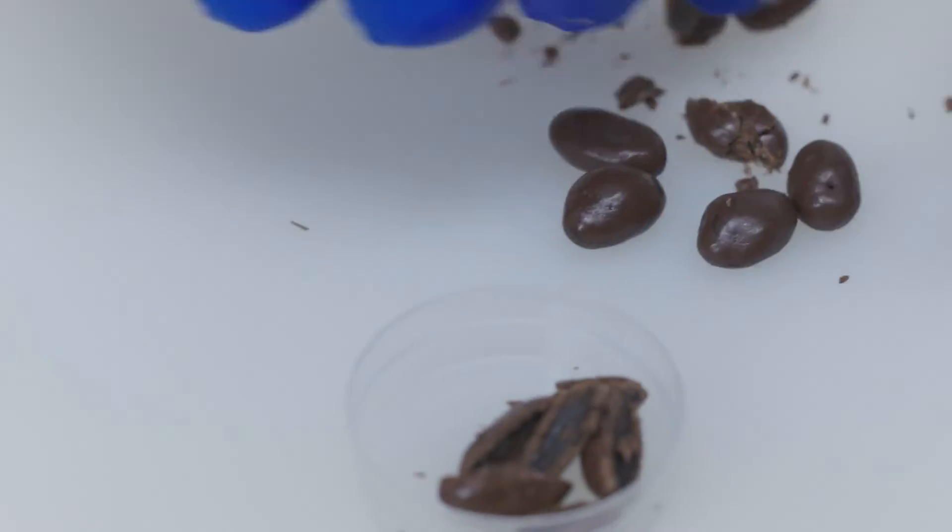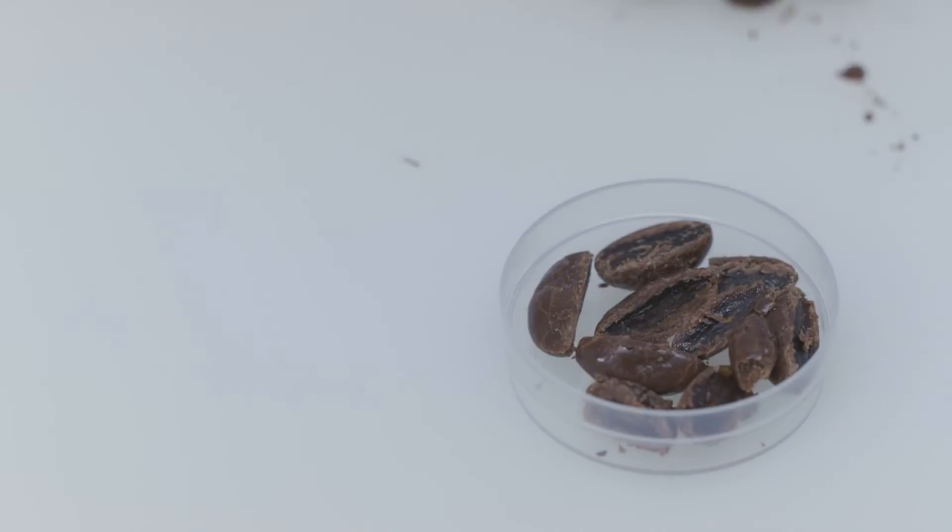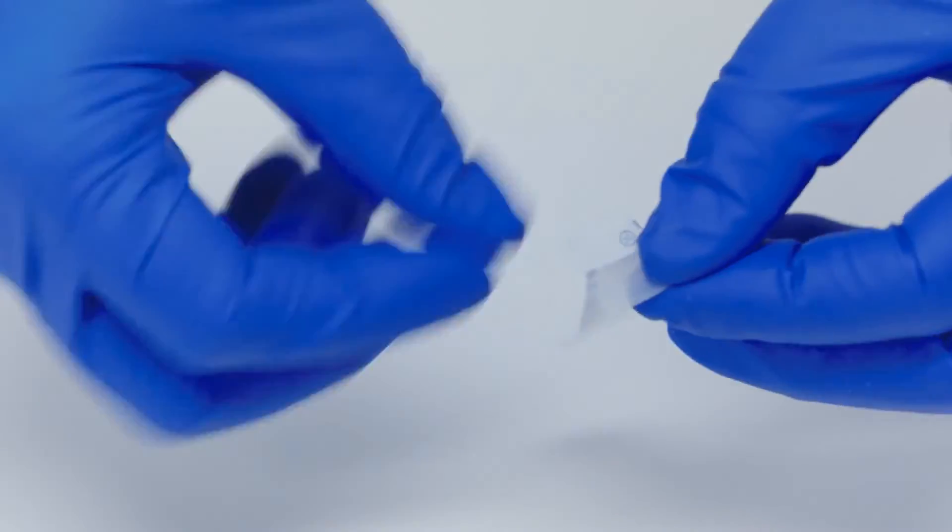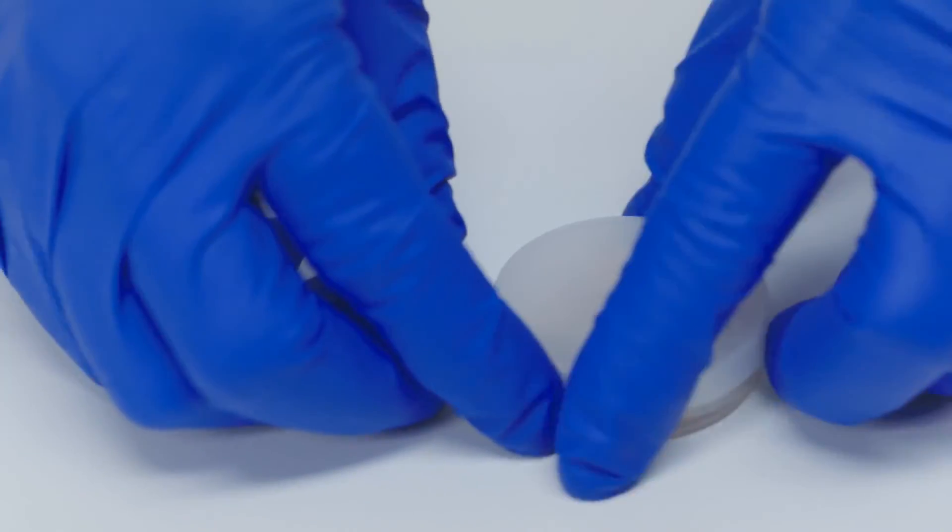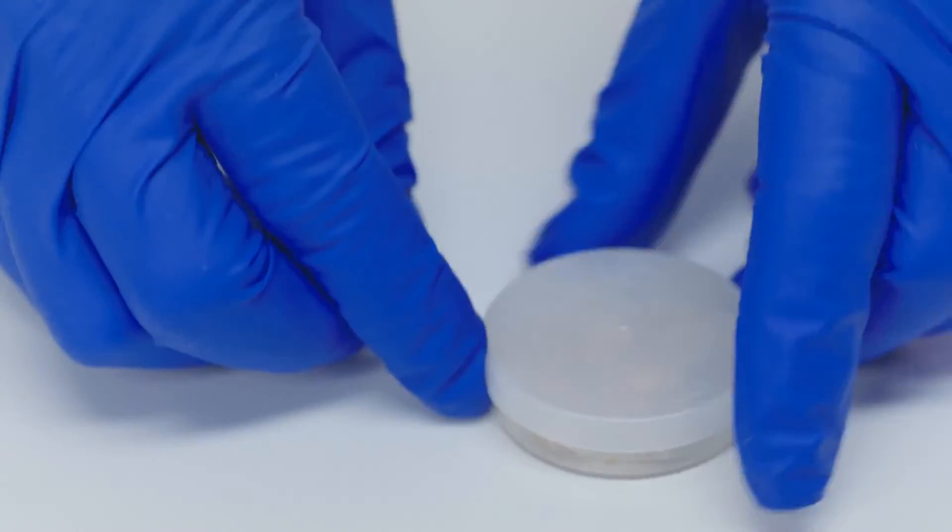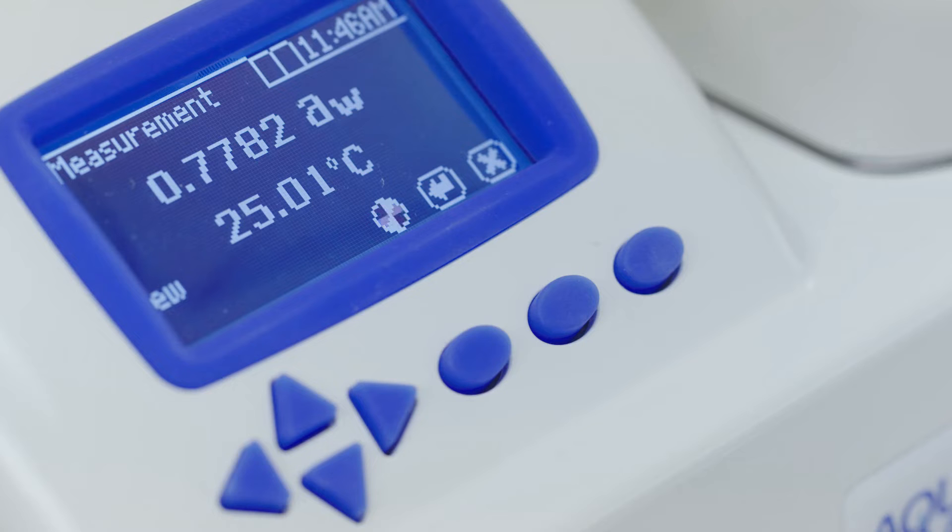Establish a standard operating procedure to specify how samples are prepared and be consistent. Your procedure should include how the sample is handled while waiting to be read, and the temperature the sample and instrument should be at during the reading. When you set up this protocol, consider running your own tests to find which preparation method produces the most stable result.